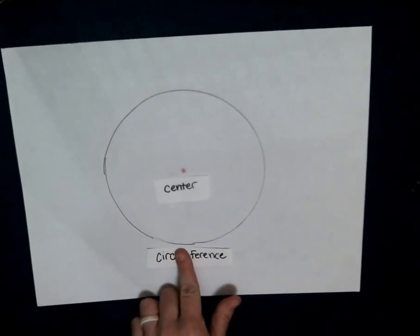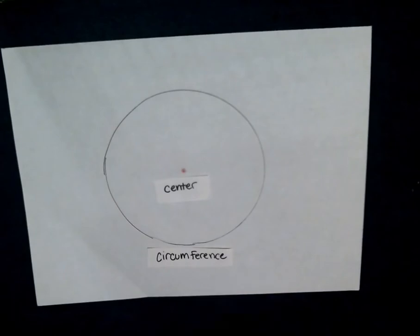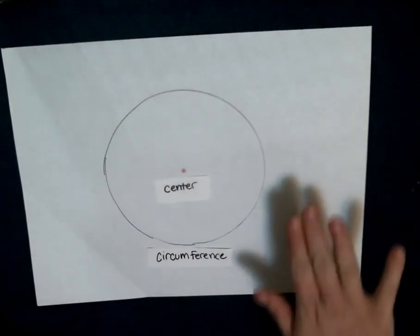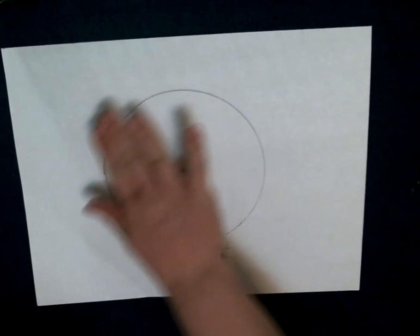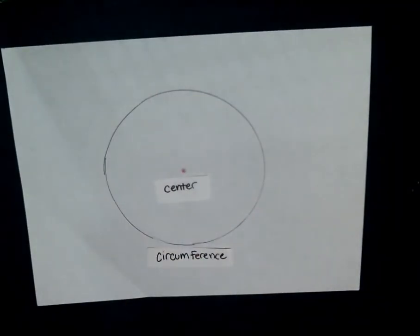See the circ there? Circumference. So circumference is the line that goes around the circle, then closes the space and makes it a circle.